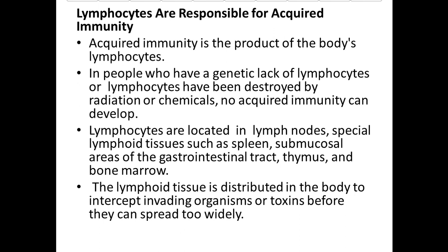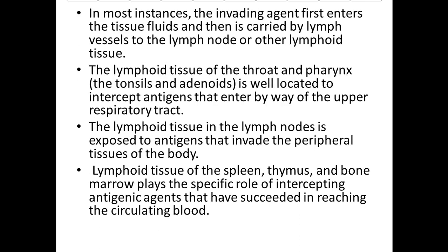In most instances, the invading agent first enters the tissue fluids, then is carried by lymph vessels to the lymph node or other lymphoid tissue. The lymphoid tissue of the throat and pharynx — the tonsils and adenoids — is well located to intercept antigens entering via the upper respiratory tract. The lymphoid tissue in the lymph nodes is exposed to antigens that invade peripheral tissues. Lymphoid tissues of the spleen, thymus, and bone marrow intercept antigenic agents that have reached the circulating blood.